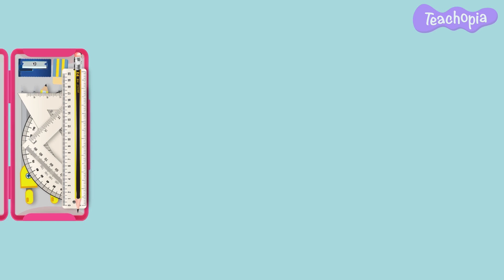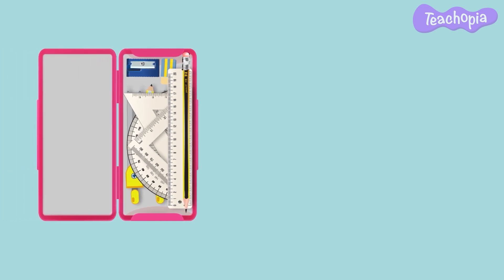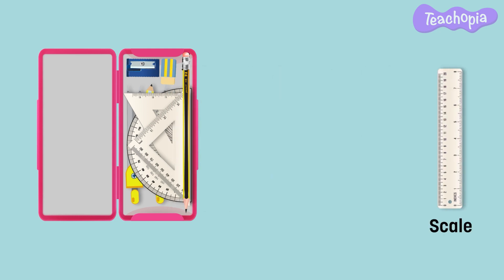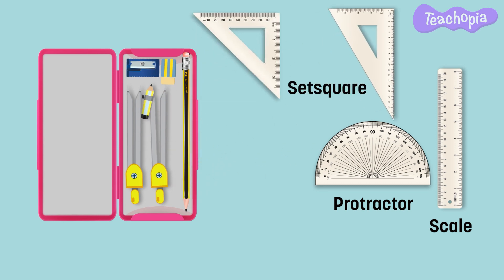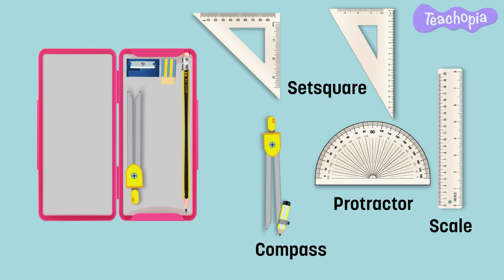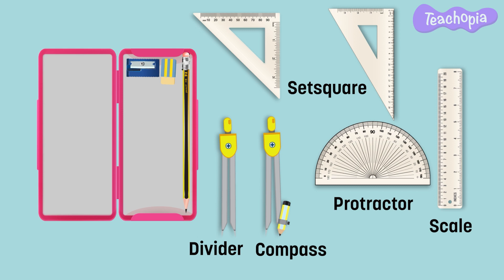Looks like we have learned about some uses of the instruments in the geometry box. Let us quickly recap. The scale is used for drawing straight lines and parallel lines, but should not be used to draw a perpendicular line using the short and long edges. The protractor is used to measure and draw lines at required angles. The set square is used to draw parallel and perpendicular lines, and can also be used to measure the height of a triangle, measure the distance between two parallel lines, and find the center of a circle without paper folding. The compass is used for drawing circles and arcs. The divider is used for comparing lengths, finding the distance between two points, and marking points at a distance on multiple lines.